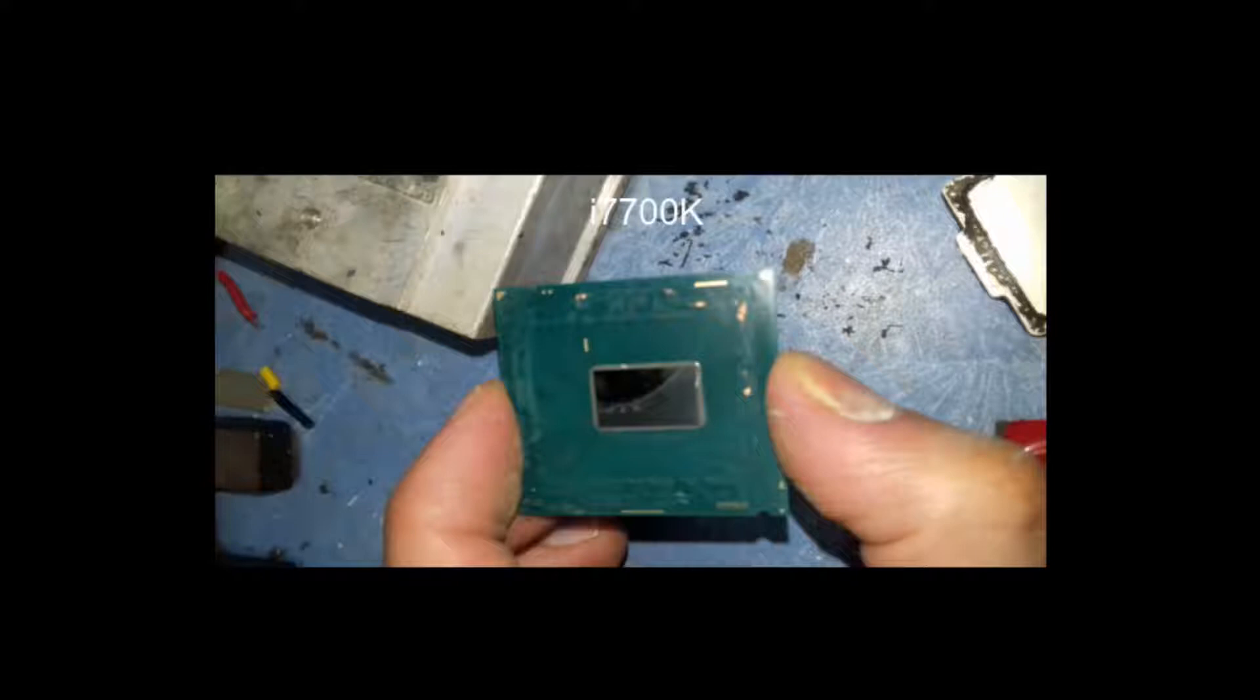If you watched videos on YouTube on how people delid processors, you might not see the full picture. In videos all this process looks simple and easy, and the gap between the heat spreader and the processor looks wider. But in reality the gap is very small and you can hardly put a blade between the heat spreader and the processor.